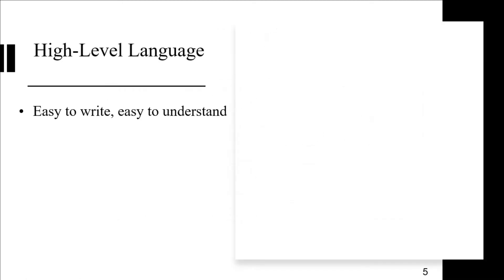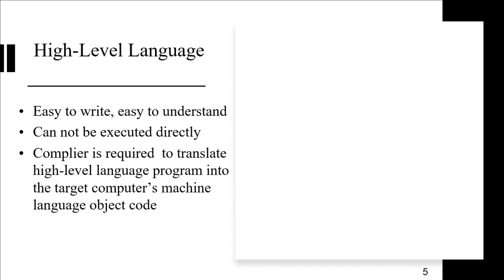High-level languages are easy to write and easy to understand because they are very similar to English. However, high-level language programs cannot be executed directly. You require a compiler to translate a high-level language program into the target computer's machine language object code. The compiler is the system software required for this translation. The resulting code is known as object code — the code which is the object for execution by the underlying hardware.